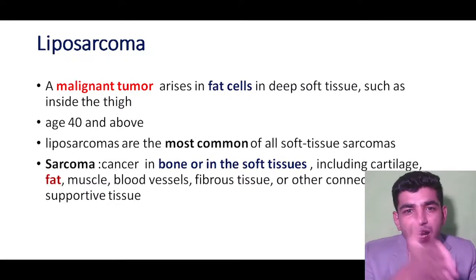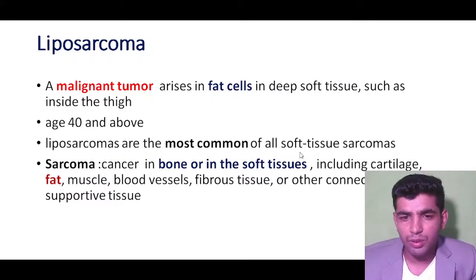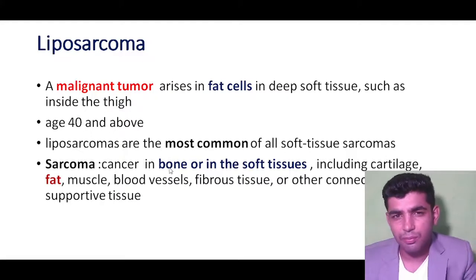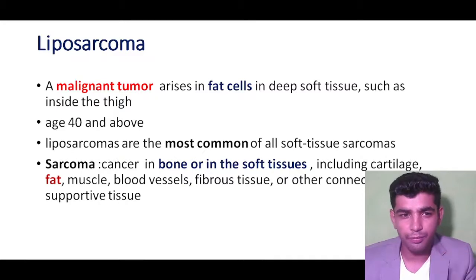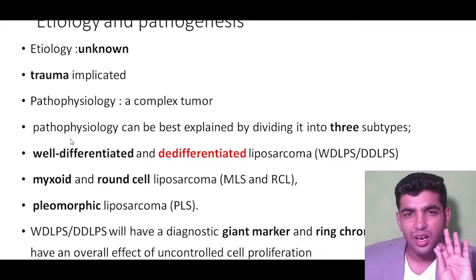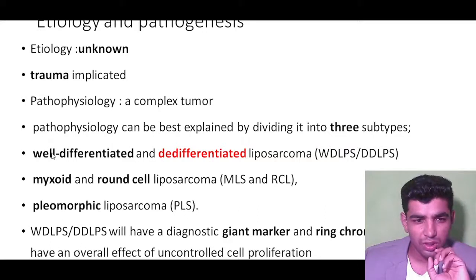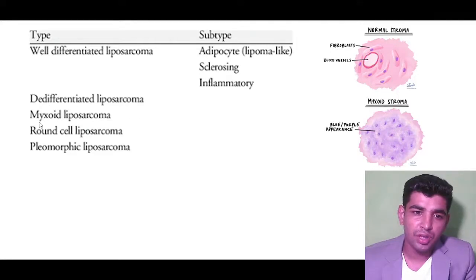Liposarcoma is a malignant tumor that arises in fat cells. It is the most common soft tissue sarcoma, mainly occurring in bone and soft tissue. The etiology and pathogenesis are largely unknown. Types of liposarcoma include: well-differentiated, de-differentiated, myxoid, round cell, and pleomorphic liposarcoma.